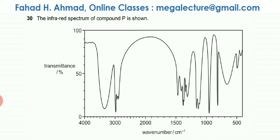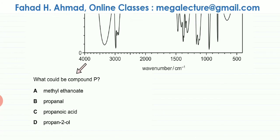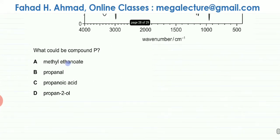Now the question is that we need to figure out what could be compound P. There are four different options given and you need to figure out which one is compound P. Let me first draw the structure of each one of these compounds.